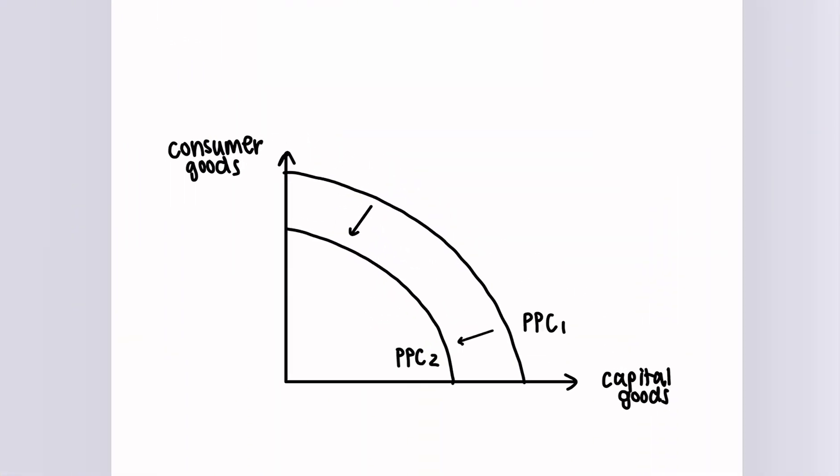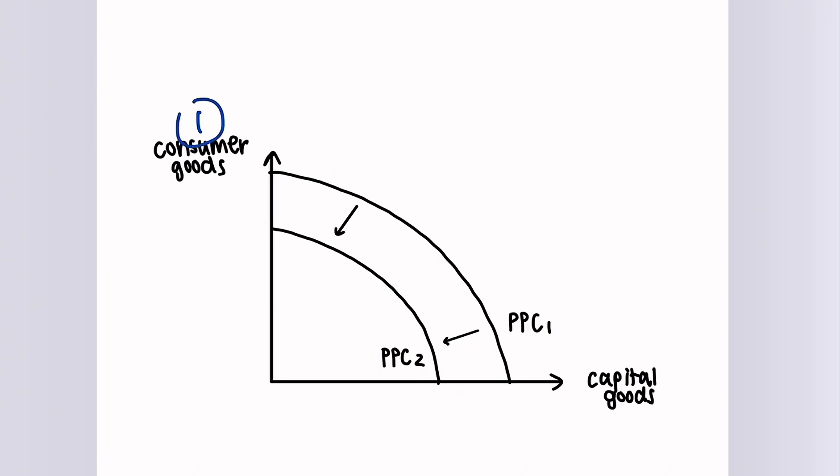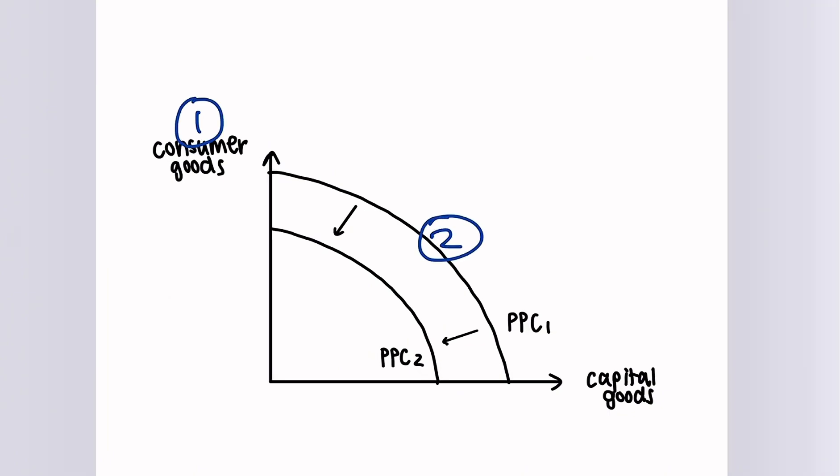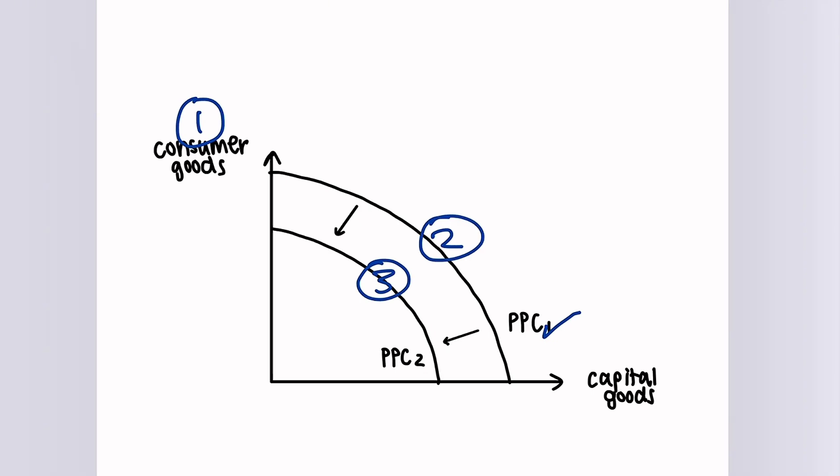So here's an example. Our first mark comes from labelling the axes. The second mark is the original line with the label. Our third mark comes from the movement of the line. So in this case PPC1 is shifting to the left to PPC2. And the final mark comes from labelling of the PPC2 and also the arrows.